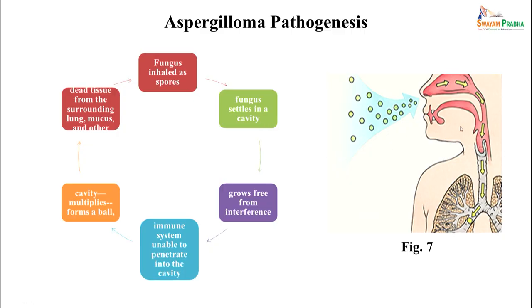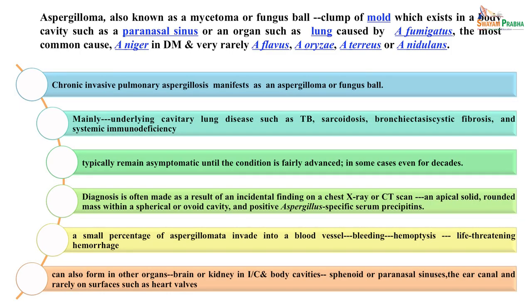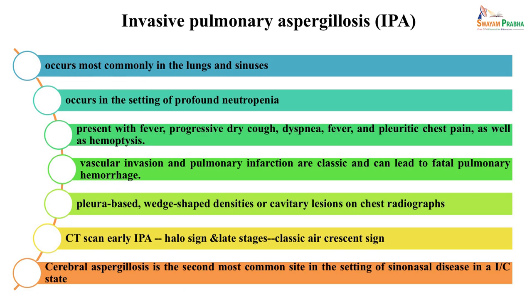Aspergilloma forms when inhaled fungal spores settle in a pre-existing cavity, grow free from immune interference, multiply, and form a ball. It may be asymptomatic or associated with underlying diseases like TB. Diagnosis can be difficult if symptoms are not typical. Invasive aspergillosis most commonly affects lungs and sinuses in the setting of neutropenia, presenting with fever, cough, chest pain, and hemoptysis, with wedge-shaped or cavitary lesions on imaging.